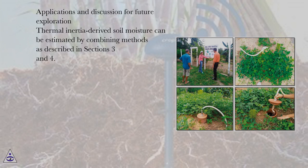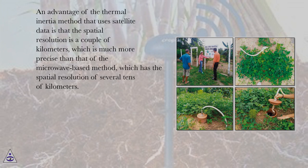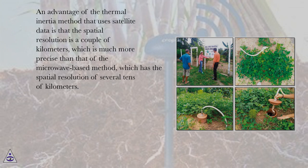Applications and discussion for future exploration: thermal inertia-derived soil moisture can be estimated by combining methods as described in sections 3 and 4. An advantage of the thermal inertia method that uses satellite data is that the spatial resolution is a couple of kilometers, which is much more precise than that of the microwave-based method, which has the spatial resolution of several tens of kilometers.